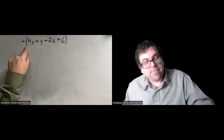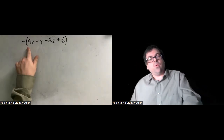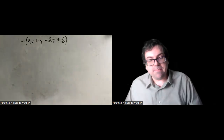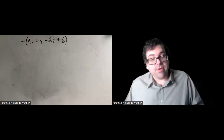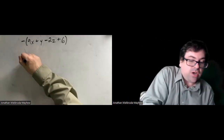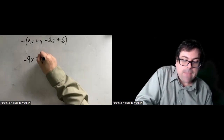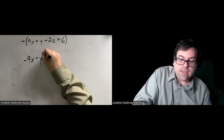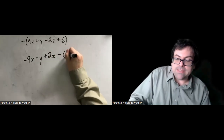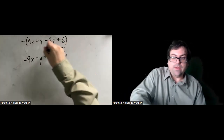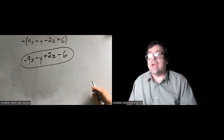Here we have a minus right up against the parentheses, so we're taking the opposite of the quantity 9x plus y minus 2z plus 6. Distributing that negative is going to change all of the signs: negative 9x minus y plus 2z minus 6. No like terms — nothing we can do to combine further.